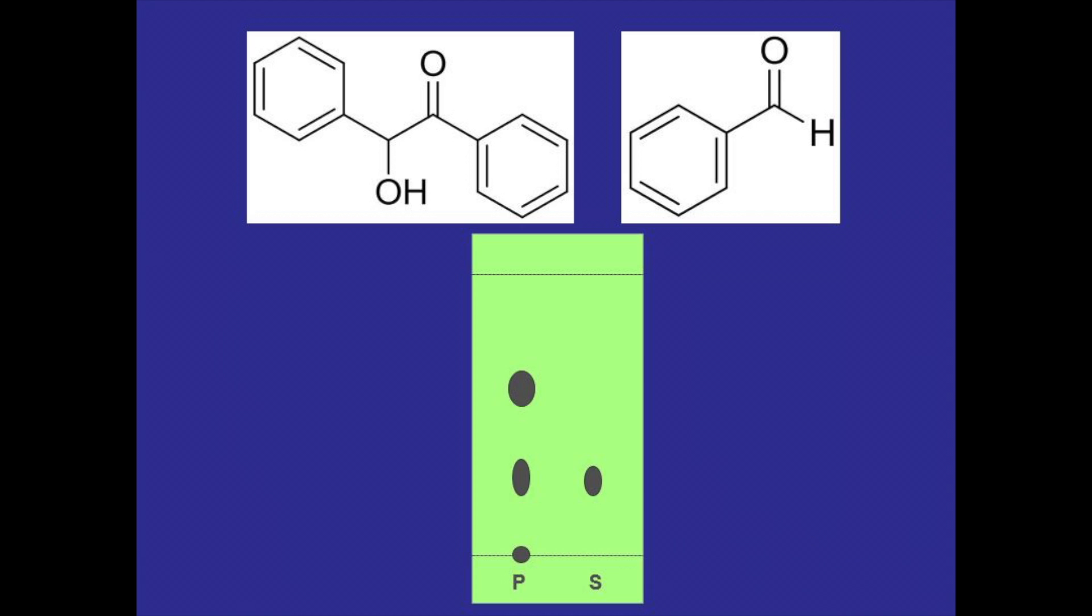Once the TLC plate is developed it could look something like this where the bottom spot that didn't really move at all would be for thiamine then the middle spot would be for benzoin because it matches with the standard and then the top spot would be for benzaldehyde since it's less polar than benzoin.